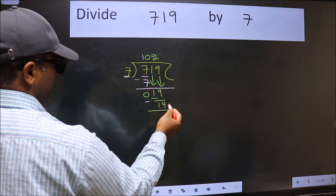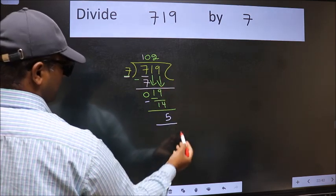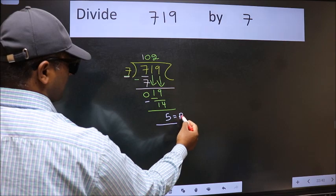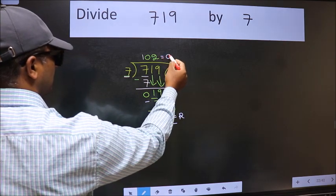No more numbers to bring down. So we stop here. This is our remainder and this is our quotient.